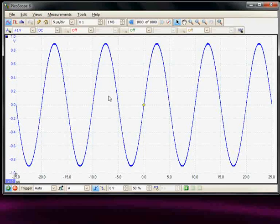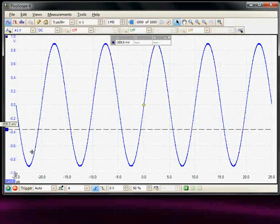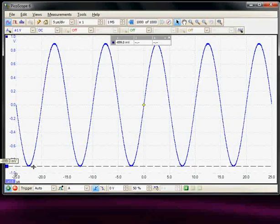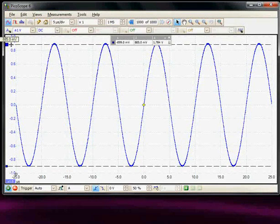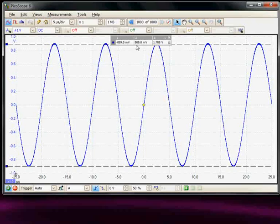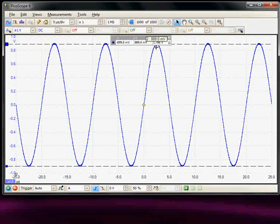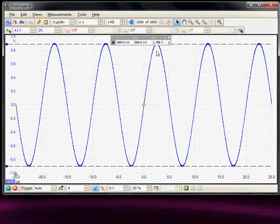If I wanted to measure the amplitude, we also have amplitude cursors available, so I could put a cursor at the bottom of the waveform and a second cursor on the top of the waveform, and here we can measure the peak-to-peak value here manually as 1.788 volts.